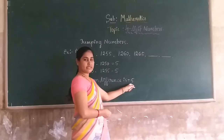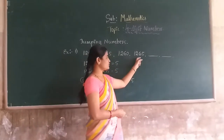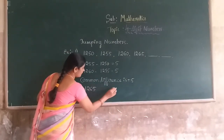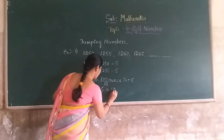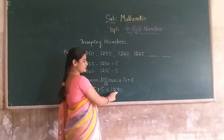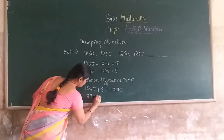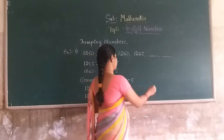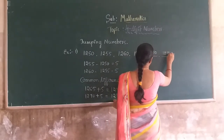Therefore, you add the common difference 5 to the last number to get the next number. 1265 plus 5 gives you 1270. Then 1270 plus 5 gives you 1275. The missing numbers are 1270 and 1275.